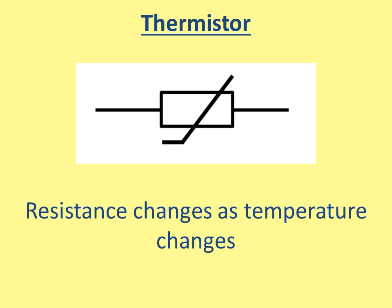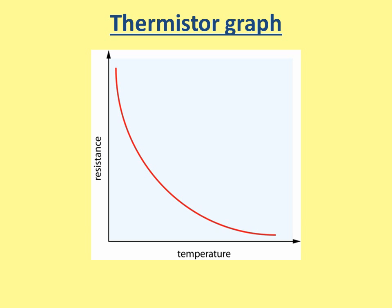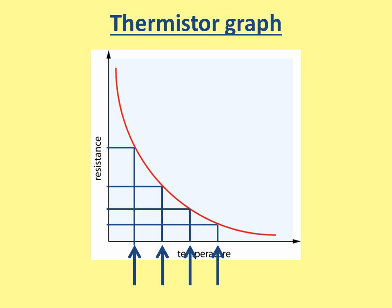A thermistor works by changing resistance depending on temperature. This is quite an important graph to know. As with all graphs, the first thing to look at is your axes. You can see the temperature is increasing along the x-axis, and if we go up at that temperature we can find the resistance using the y-axis. As temperature increases, the resistance is getting lower.